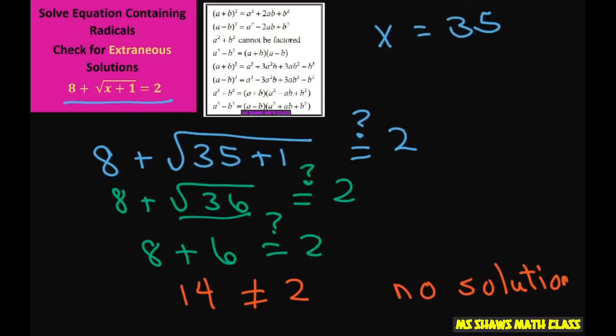And x equals 35 is considered an extraneous solution.